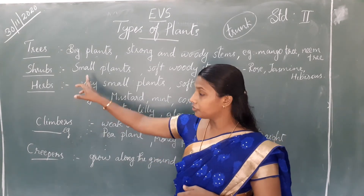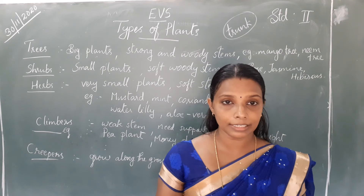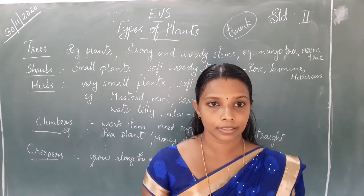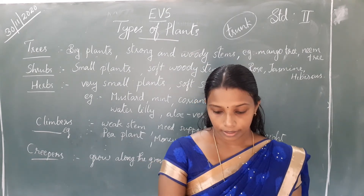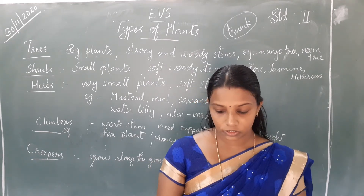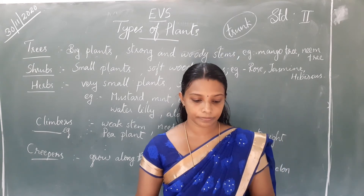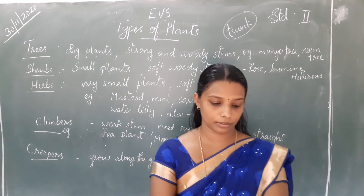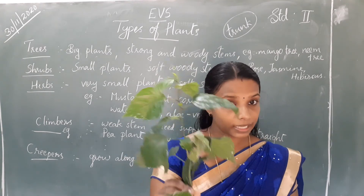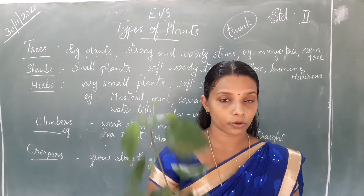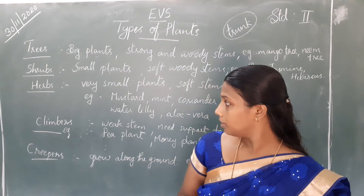Shrubs are smaller plants than trees and have a soft woody stem. Examples are hibiscus and rose plant.